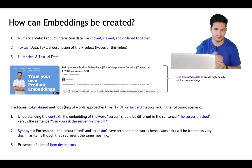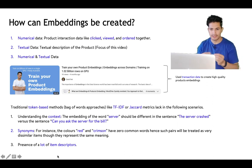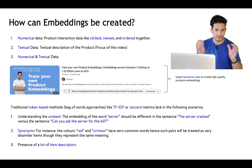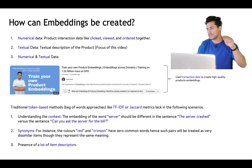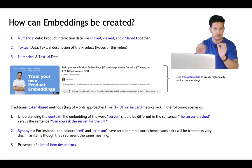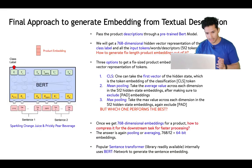How can one generate this condensed representation of an entity? Embeddings can be generated from numerical data — looking at click, view, and order transaction sequences, for example items clicked or ordered together. They can also be generated from the textual description of a product — for example 'sparkling orange juice' and 'prickly pear beverage' as similar items.